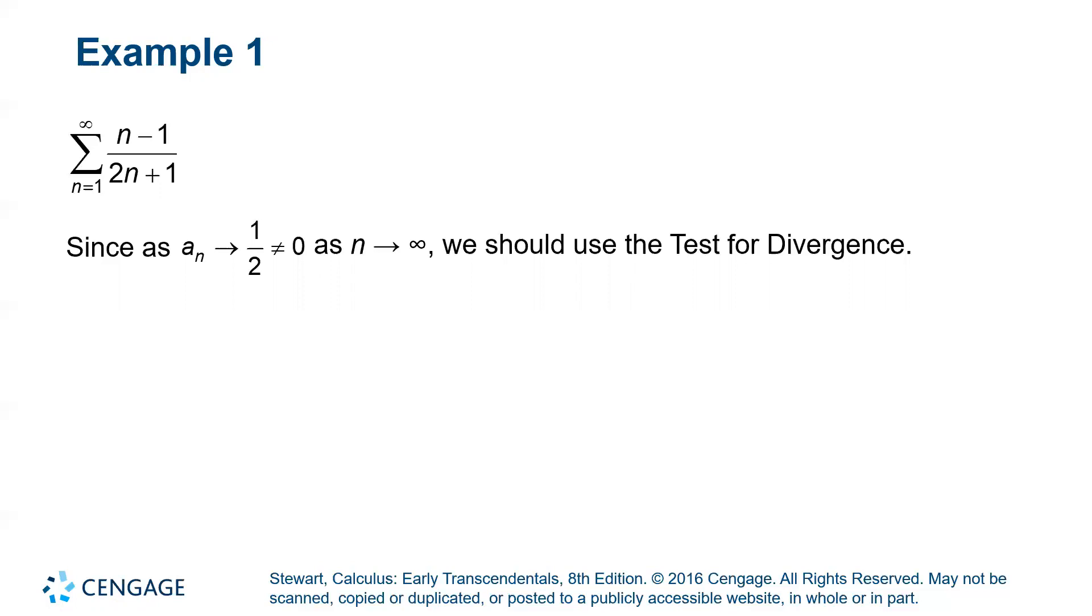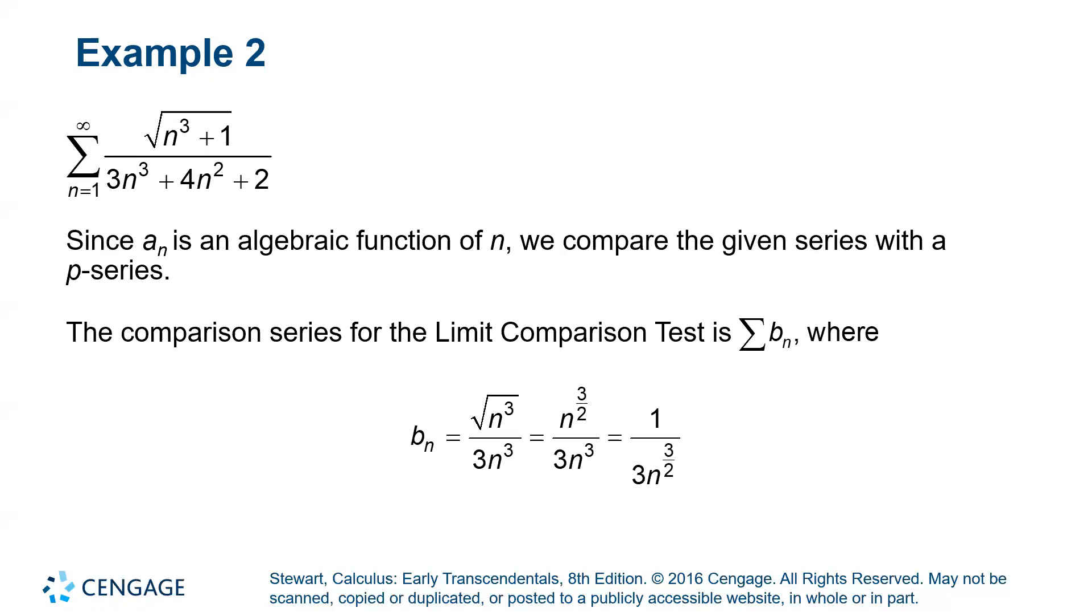Next up we have the square root of n cubed plus one over three n cubed plus four n squared plus two. So this sort of looks like a p-series because we have n raised to a power all over the place but it's not directly a p-series. So instead we could compare to a p-series. So if you consider